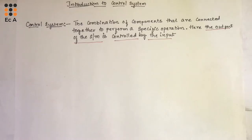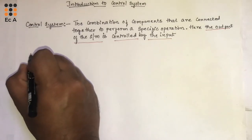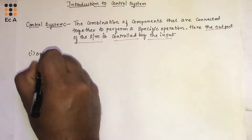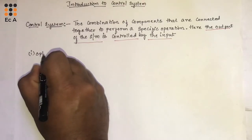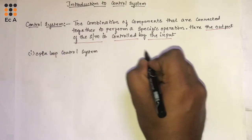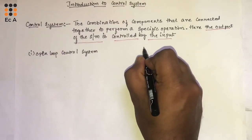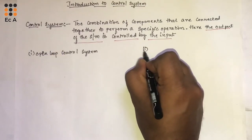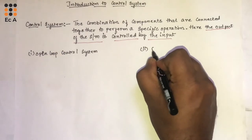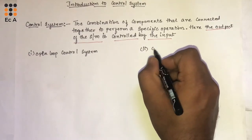There are two basic types of control systems. The first one is the open loop control system, and the second one is the closed loop control system.